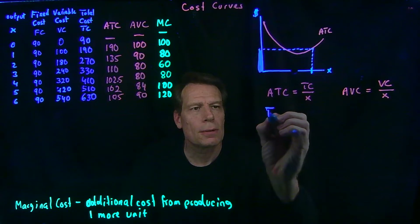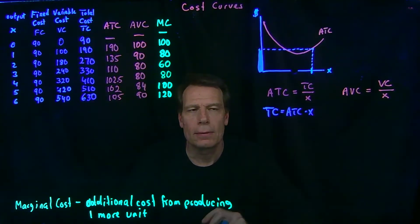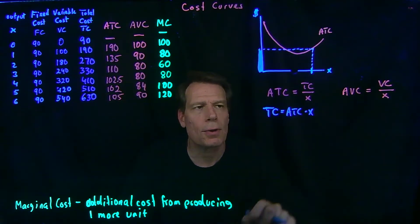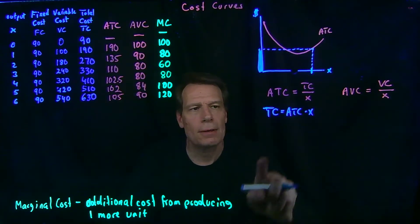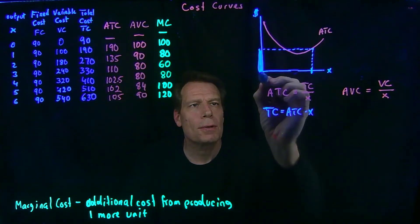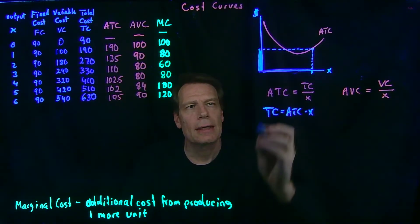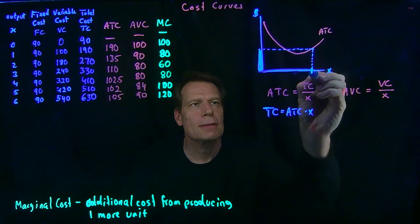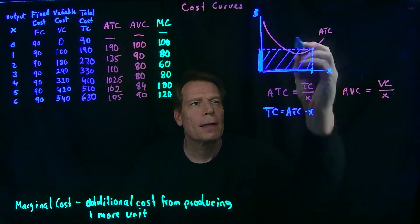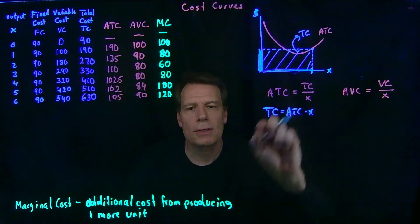The total cost is just the average total cost times output. We can take the equation that's the definition of average total cost, multiply through by x, and we get this equation. So the average total cost times the amount of output gives us this vertical distance times this horizontal distance, which gives us the area of a rectangle. That rectangle is the total cost the firm incurs if it's producing this much output.